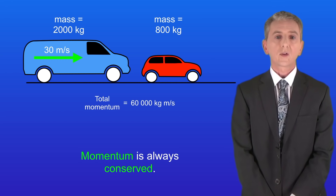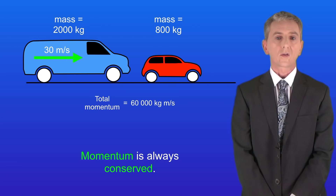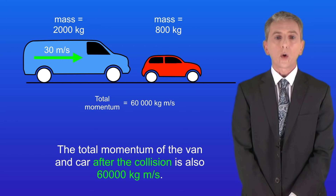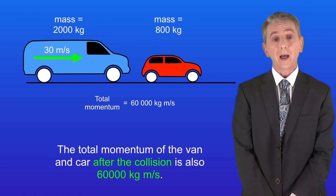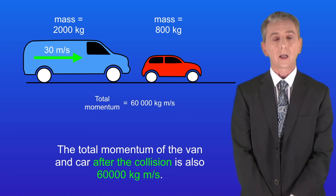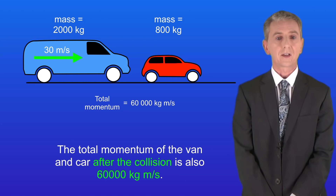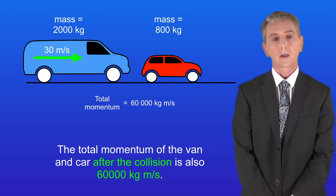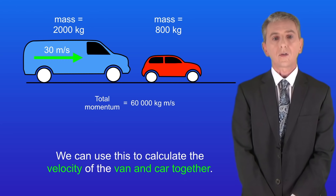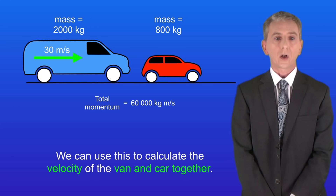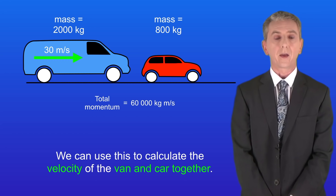As we saw before, momentum is always conserved. So that means that the total momentum of the van and the car after the collision is also 60,000 kilograms meters per second. We can use this to calculate the velocity of the van and the car together.